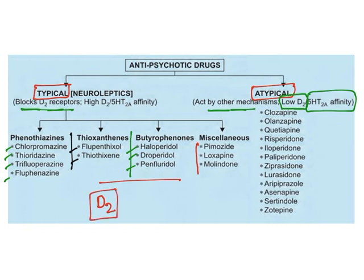Atypical antipsychotics include clozapine, olanzapine, quetiapine, risperidone, and aripiprazole — all of which can be used to treat psychosis.